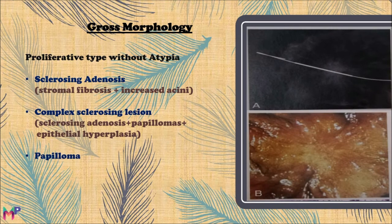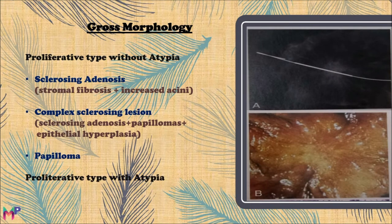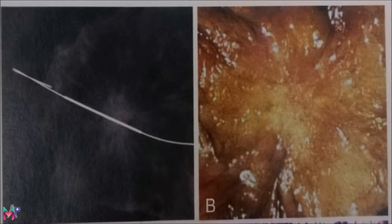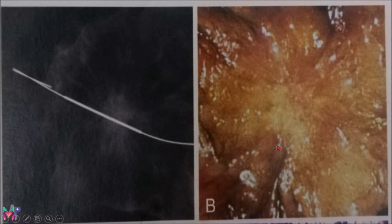Papillomas may also be seen in the proliferative type without atypia. They are papillary growths or finger-like projections seen in the lactiferous sinuses or ductal system of the breast, mainly occurring in dilated ducts. Clinically, papillomas appear as bloody discharge from the nipple and may also present as a palpable mass. The proliferative type with atypia resembles closely to carcinoma in situ — the ductal type to ductal carcinoma in situ and the lobular type to lobular carcinoma in situ grossly. On mammogram, radial sclerosing lesions show a central mass with long radio-dense projections; grossly they appear as star-like masses resembling invasive carcinoma.